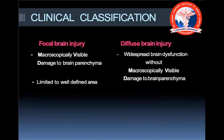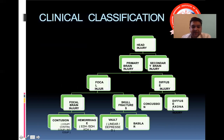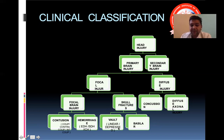A focal brain injury is a macroscopically visible injury to the brain parenchyma, limited to a well-defined area. A diffuse injury is widespread and without macroscopically visible trauma to the brain parenchyma. Focal injuries include contusion and hemorrhage — contusions could be coup, counter-coup, or intermediary coup. Hemorrhages could be EDH (extradural), subdural, or intracranial hemorrhage. Skull fractures could be vault fractures (linear or depressed) or basilar fractures. Diffuse injuries include concussion and diffuse axonal injury.